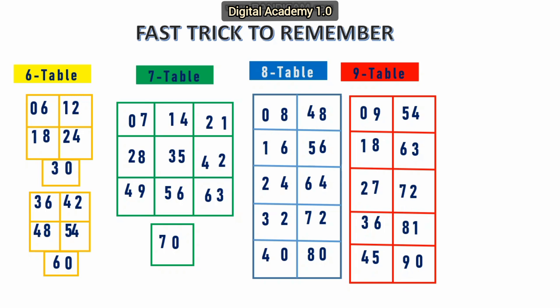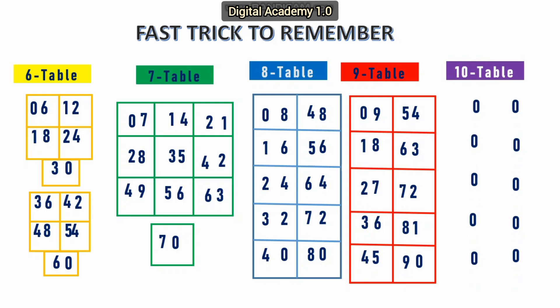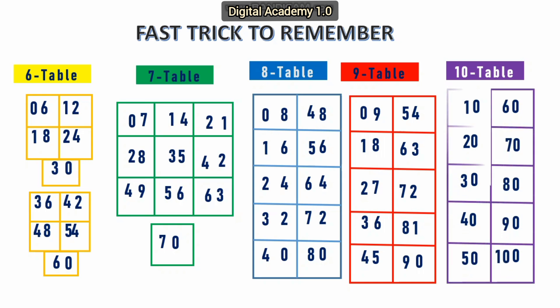Next and the last, the table of 10. It is really easy and simple to remember. In the first step, enter 0 in all boxes. In the second step, put the consecutive numbers 1, 2, 3, 4, 5, 6, 7, 8, 9, and 10 to finish the table of 10.